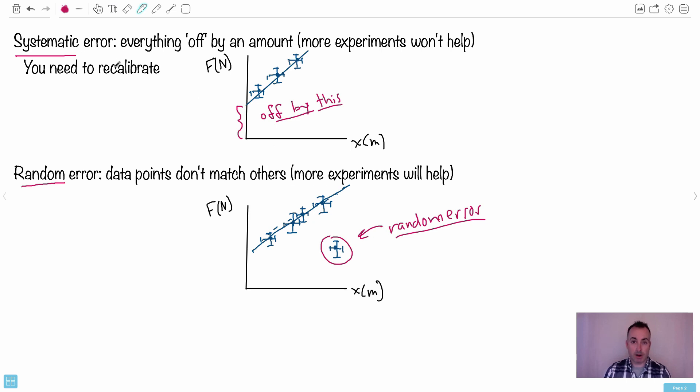So for systematic errors, more experiments don't help. You need to recalibrate. But if you have random errors, more experiments will actually help.